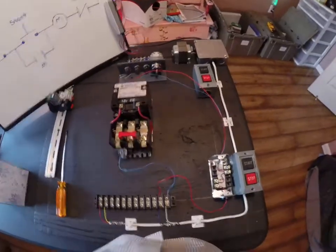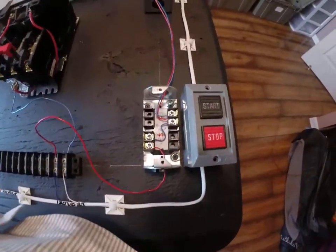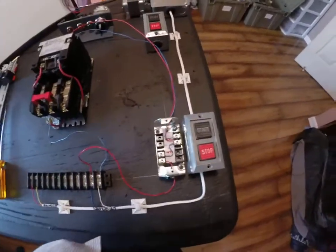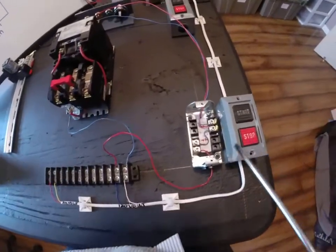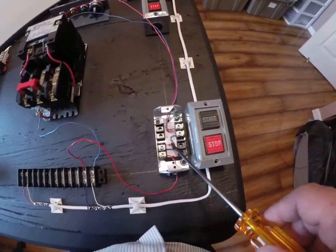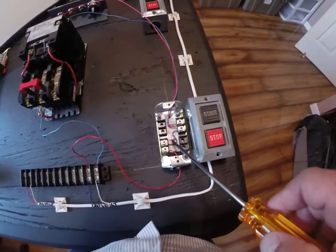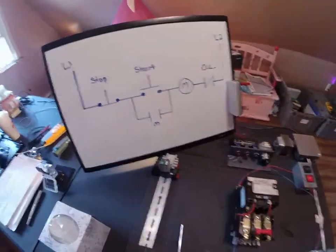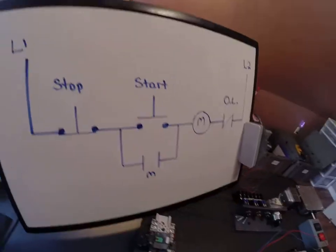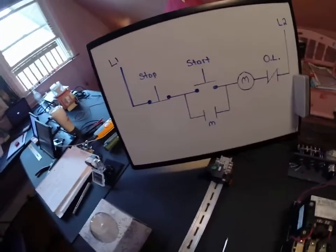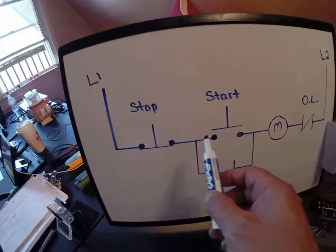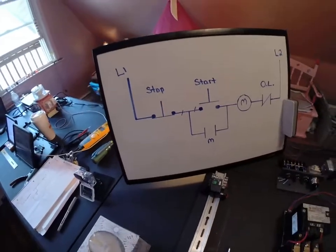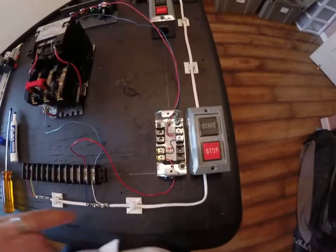We have a stop-start station and it's the first time we've actually had the stop and start wired in the same enclosure. One thing I'd like you to take note of is there's a jumper between the second screw of the stop and the first screw of the start. If I show you this on the whiteboard, that jumper is actually this cable right there.